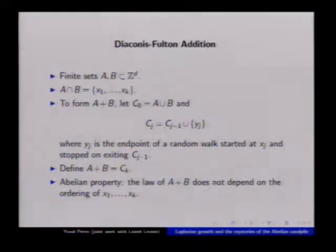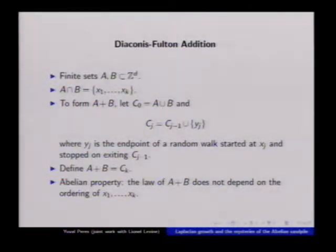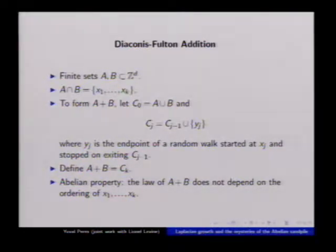Formally, the intersection is X_1 to X_K. To form A plus B, you start with the union, then take these points X_1 to X_K in some order. You let X_1 make a random walk, and Y_1 is the endpoint of that random walk, which you add to create C_1. Then you take X_2, make it do a random walk, and it settles at a new spot Y_2, and so on until you get the sum.